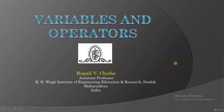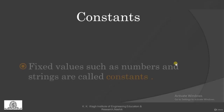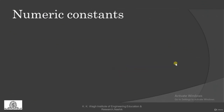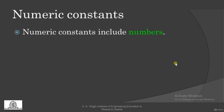Hello friends. Welcome to this new session. I hope all of you have installed Python on your system and tested it using print statements. Let us start with variables and operators. First of all, let us see constants. The fixed values such as numbers and strings are known as constants. First type is numeric constants — they include numbers. For example, print(55) will print the numeric constant 55.